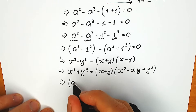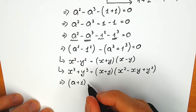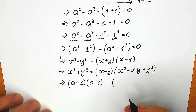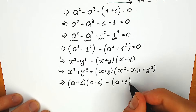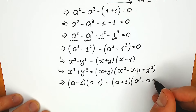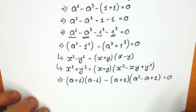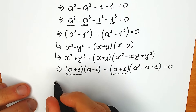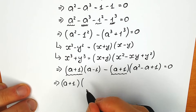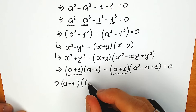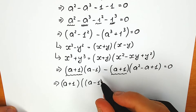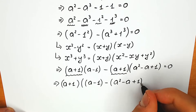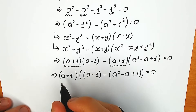Let's apply each of these formulas. For the difference of squares we get (a plus 1)(a minus 1), and for the sum of two cubes we expand minus(a cubed plus 1 cubed) as minus(a plus 1)(a squared minus a plus 1), equal to zero. So we have (a plus 1)(a minus 1) minus (a plus 1)(a squared minus a plus 1) equal to zero.